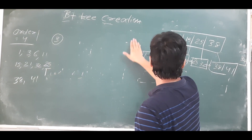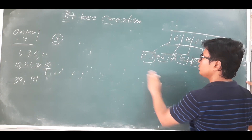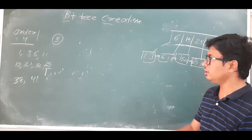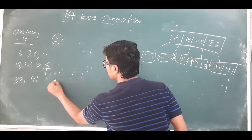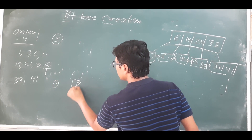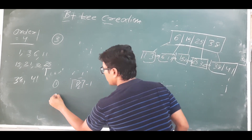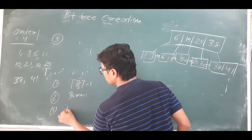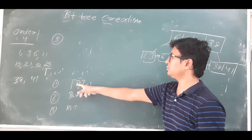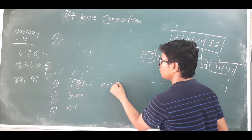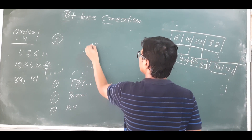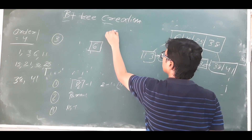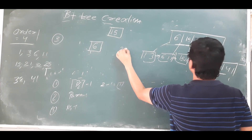Since there is an overflow in a non-leaf node, we follow three different steps. Step one: p/2 minus 1 element should be in the left subtree. The smallest from the remaining elements should go to the parent node. The remaining elements go in the right subtree. p/2 = 4/2 = 2, minus 1 = 1. So one element — 6 — goes in the left subtree. Among the remaining, the smallest element 15 is pushed to the parent node.